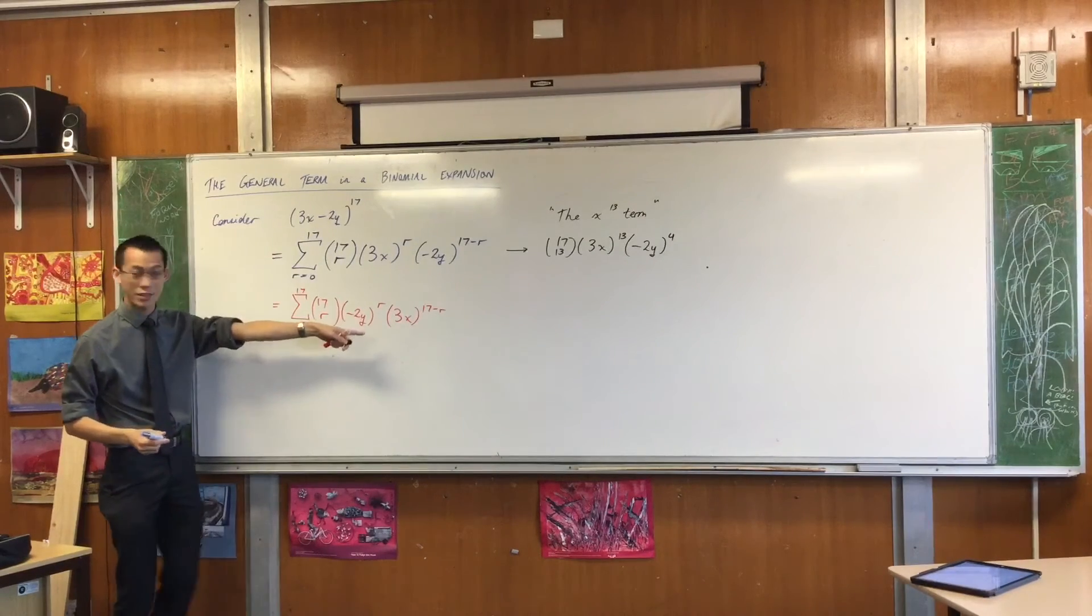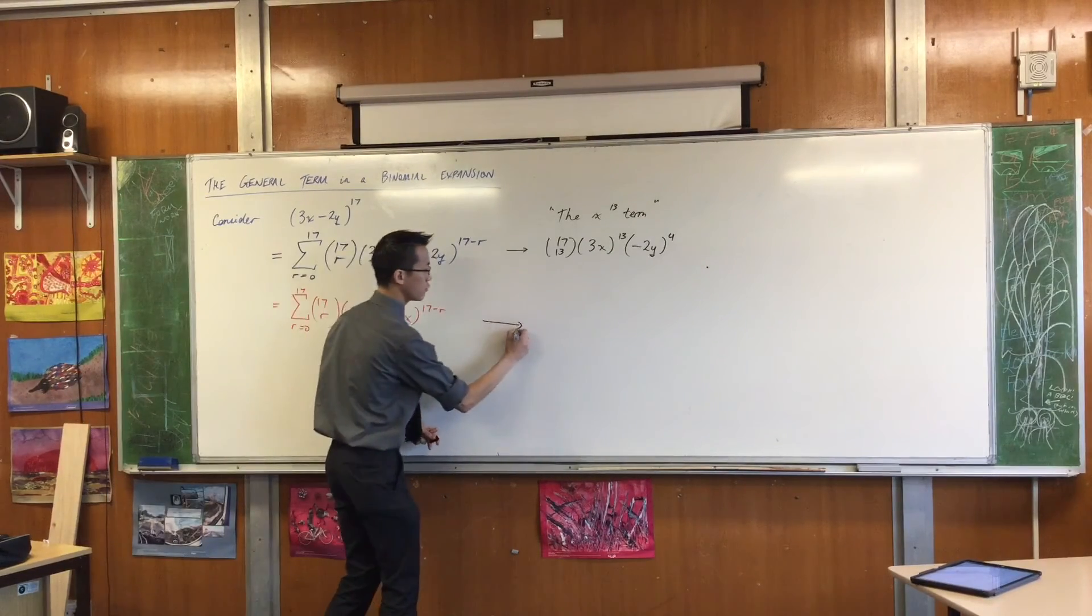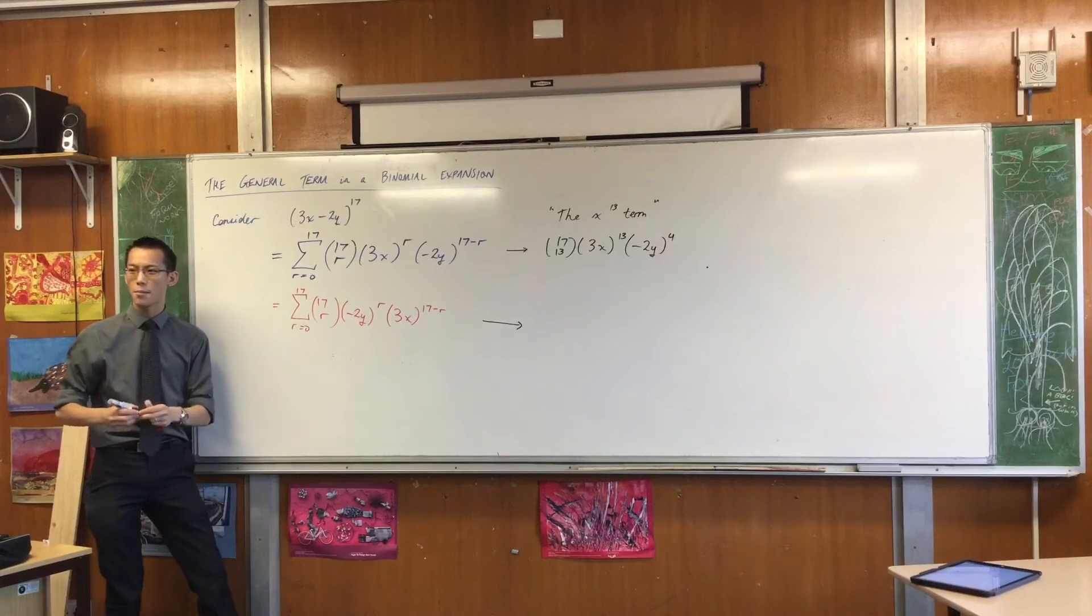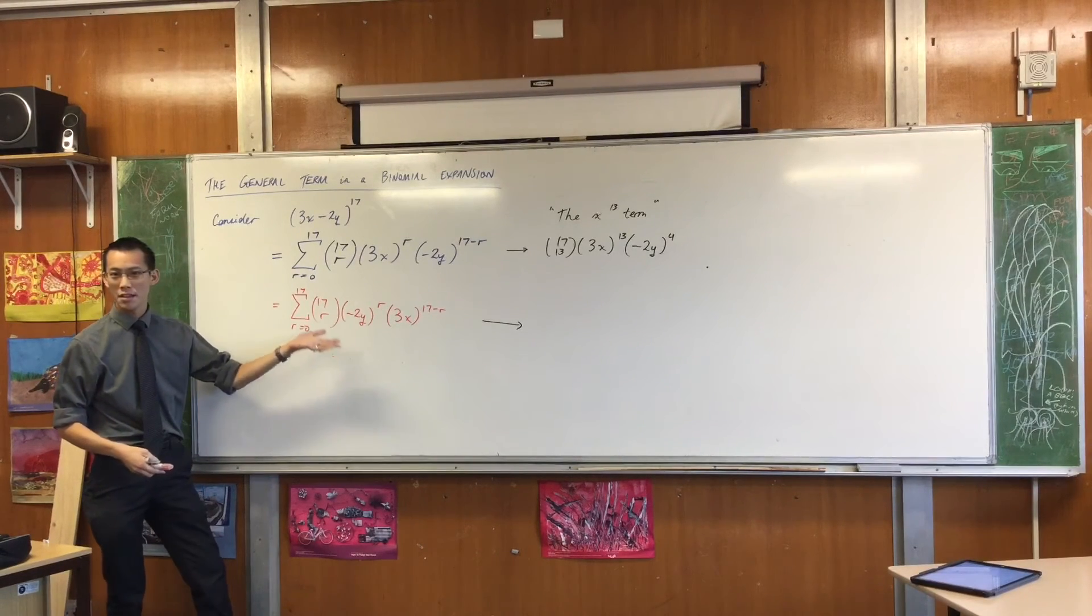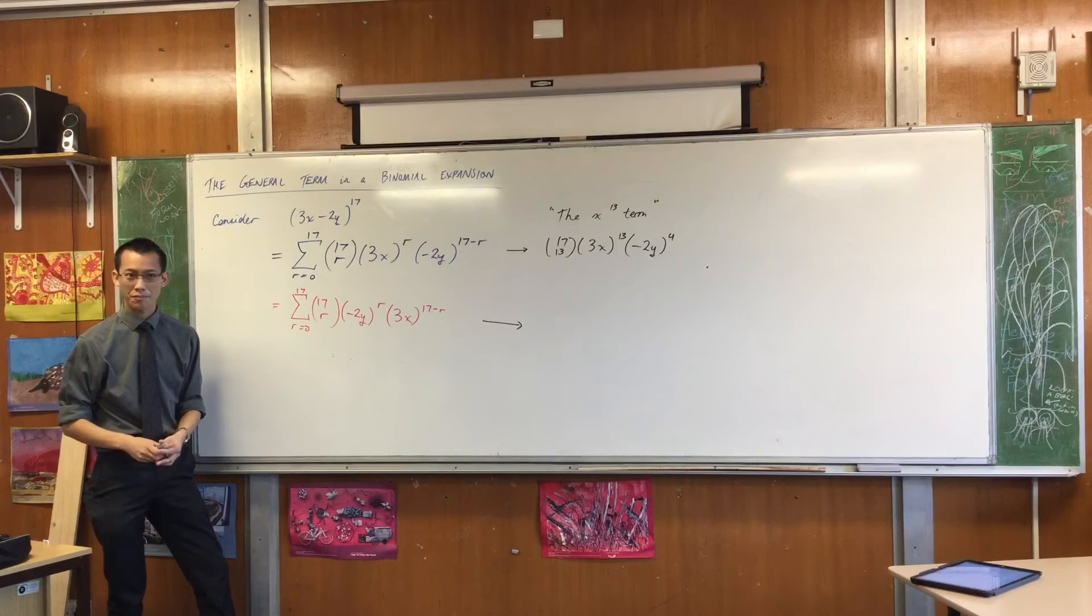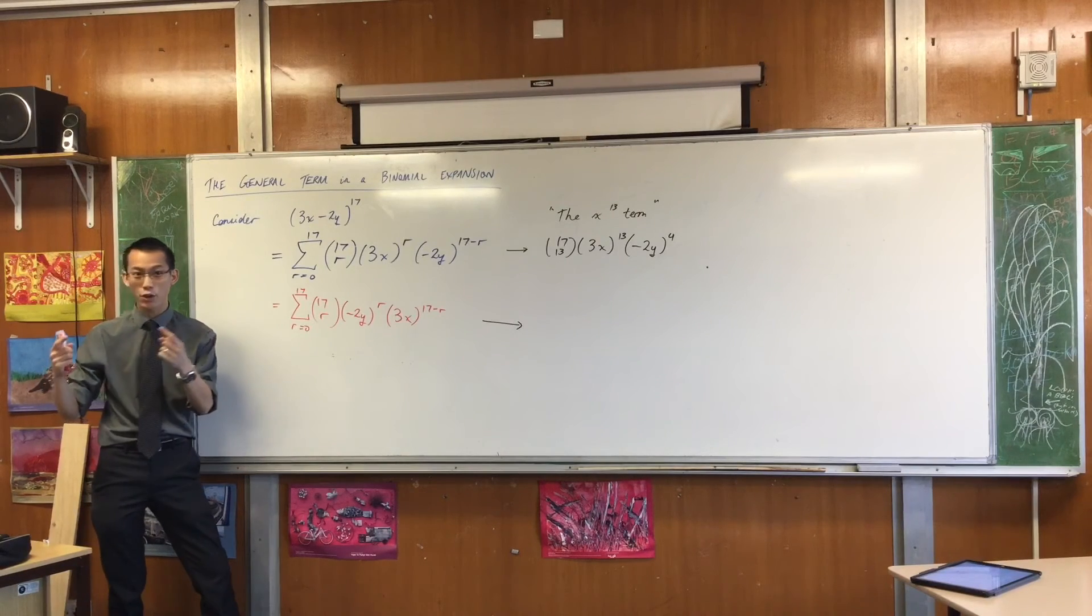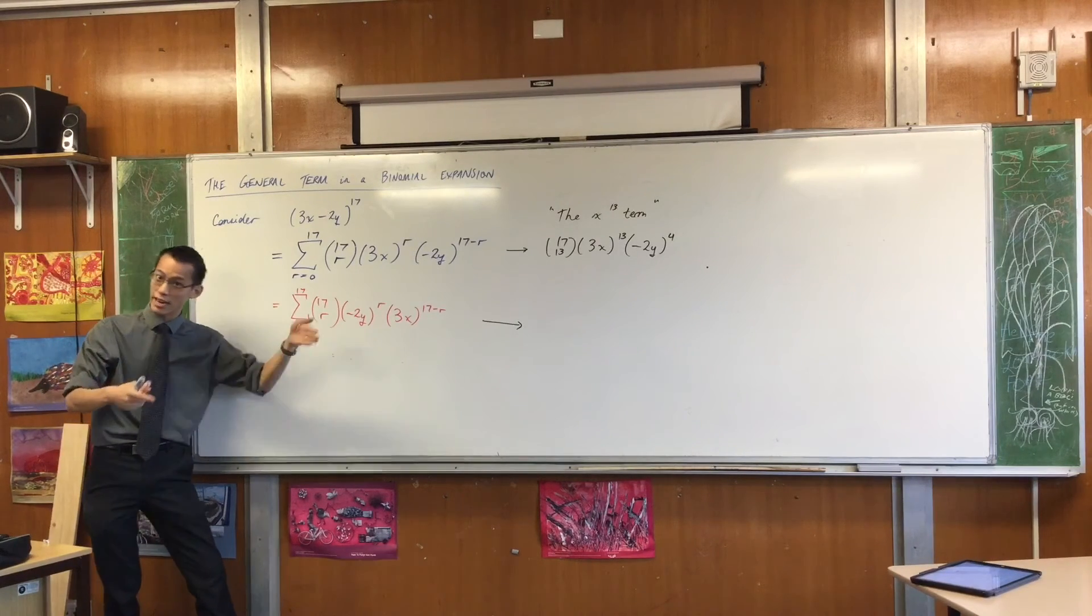Now, had I chosen this way, had I written it this way, I could still do the same thing, except it won't be the r equals 13 term that will give me the x to the 13th. Which one will it be? r equals 4. It'll be r equals 4. Because remember, I've gone from the other direction, right? So I'm just counting from the opposite end.